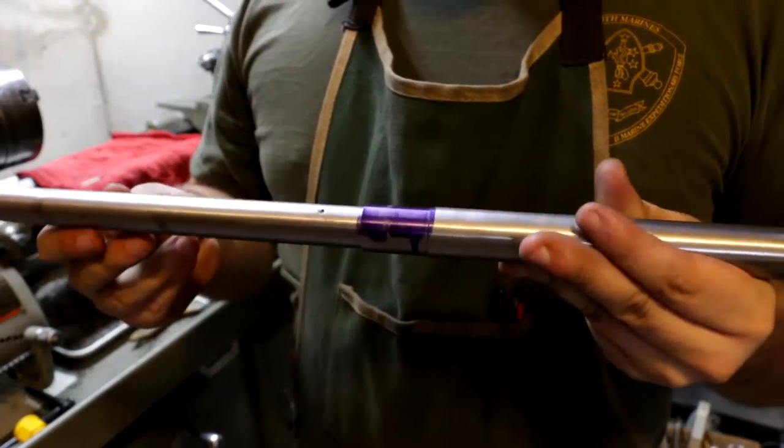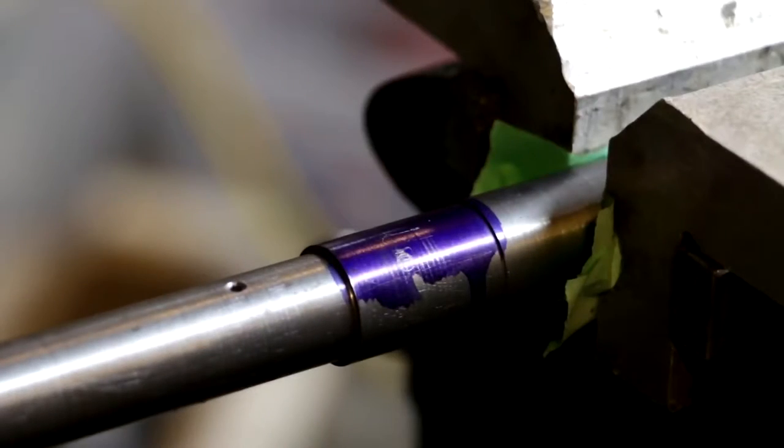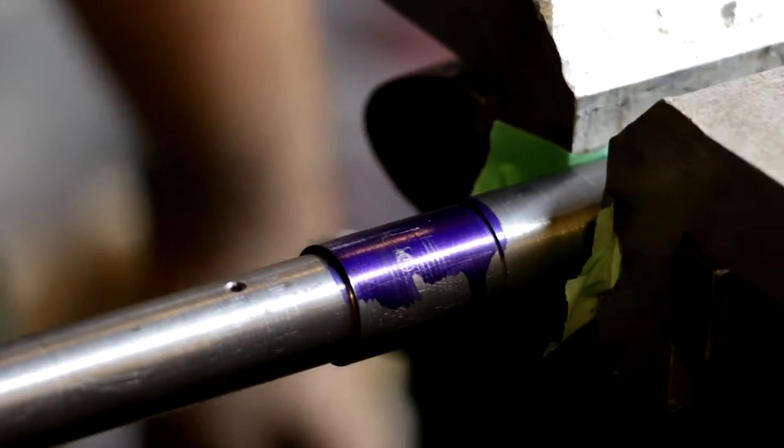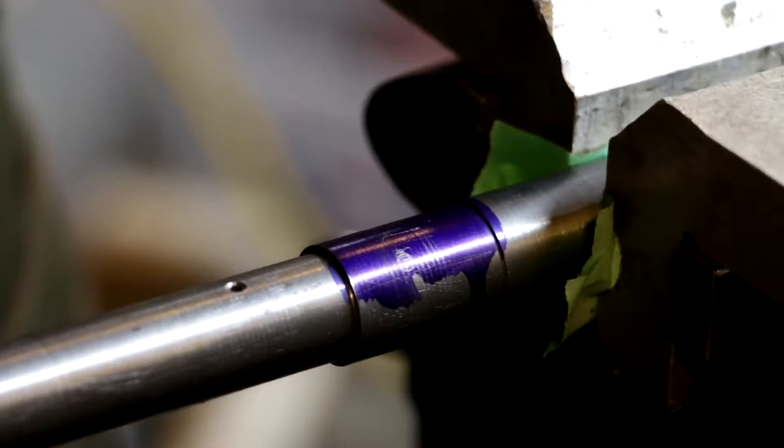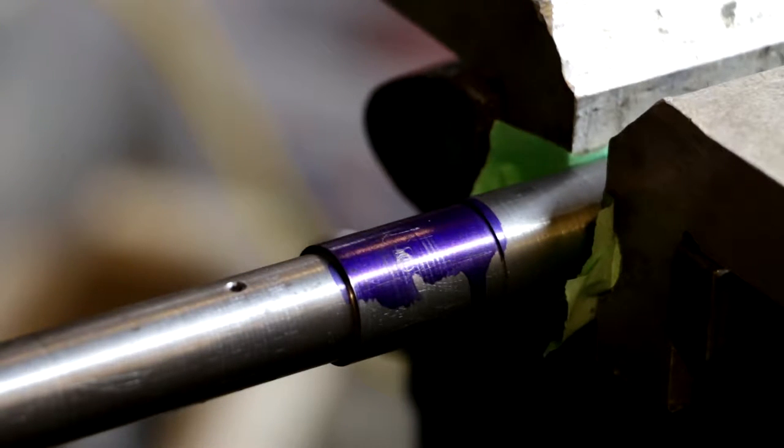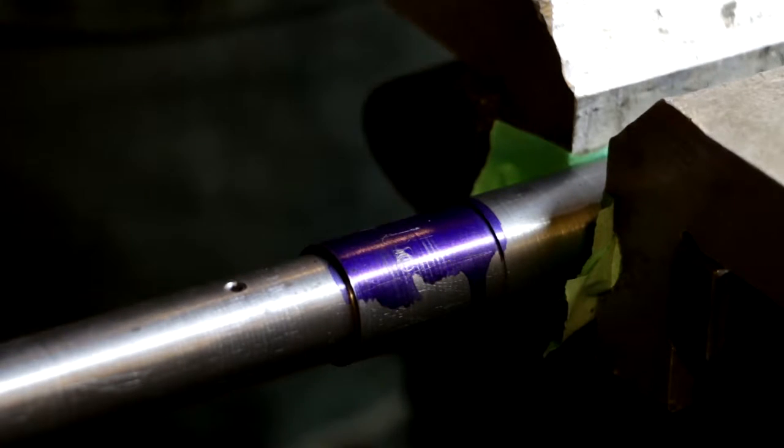We got the barrel in the vise. I've once again put a level on the rear sight block to make sure that it is not canted heavily in the vise, so while I'm taking strokes off of the barrel it should be pretty straight as long as I do my part obviously.